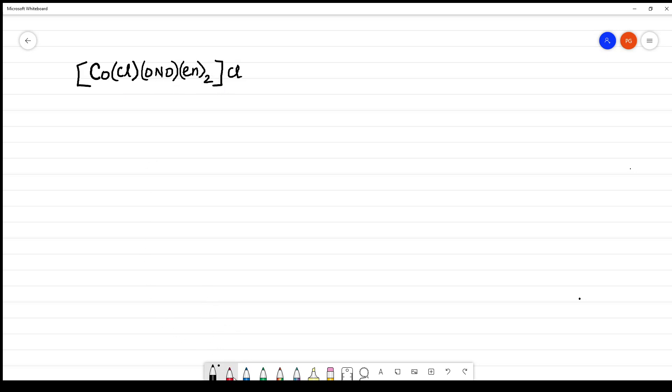So, how to name this complex? First thing, how to see if this is a cationic complex or anionic complex? Whichever is given first will be the cation, and the next will be the anion. This is a cationic complex.